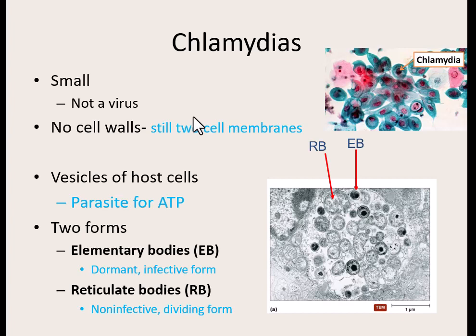Our second of the four groups are the chlamydias. Also in this group, they are extremely tiny and don't even have a cell wall at all — not just a really thin cell wall, but zero cell wall. They still have two cell membranes and are still technically gram-negative bacteria. They are parasites of our cells, specifically energy parasites — they get inside our cells and steal the ATP that our cells make in the mitochondria. They do have the machinery to make their own ATP, but they would rather steal ours, so we call them energy parasites.